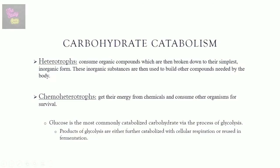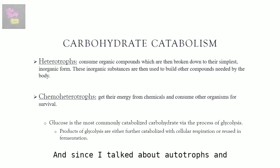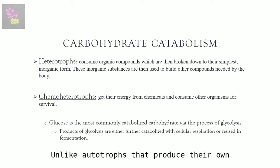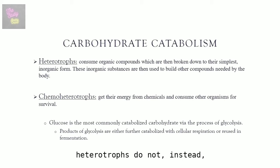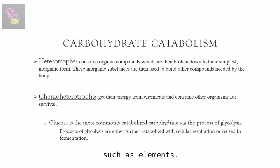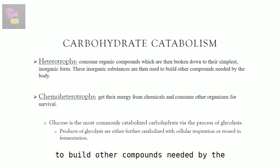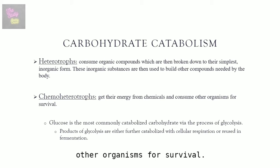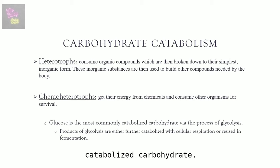Unlike autotrophs that produce their own organic compounds, heterotrophs do not. Instead, they consume organic compounds, which are broken down to their simplest inorganic form. These inorganic substances are then used to build other compounds needed by the body. Chemoheterotrophs are organisms that get energy from chemicals and consume other organisms for survival. Glucose is the most commonly catabolized carbohydrate.